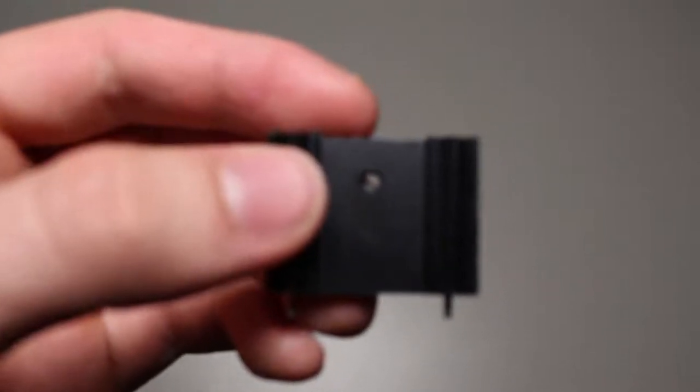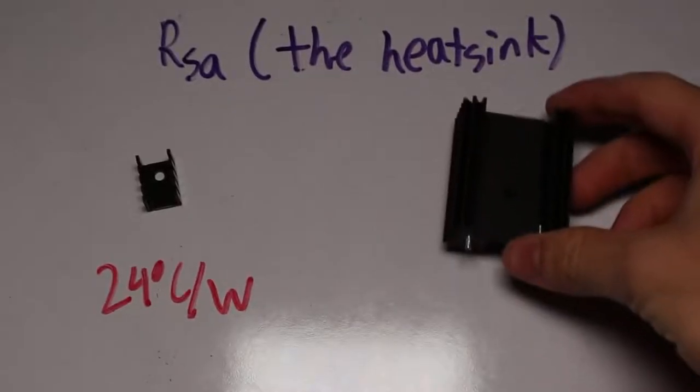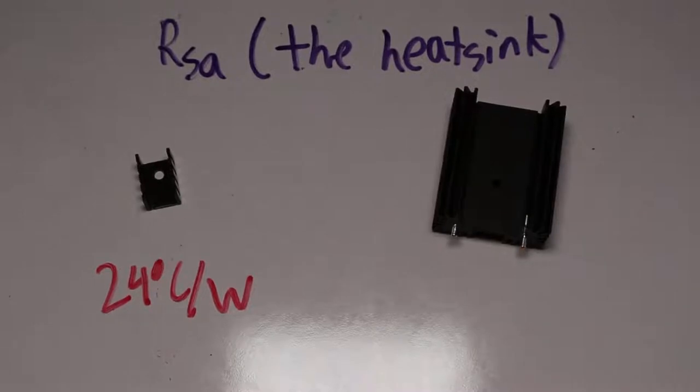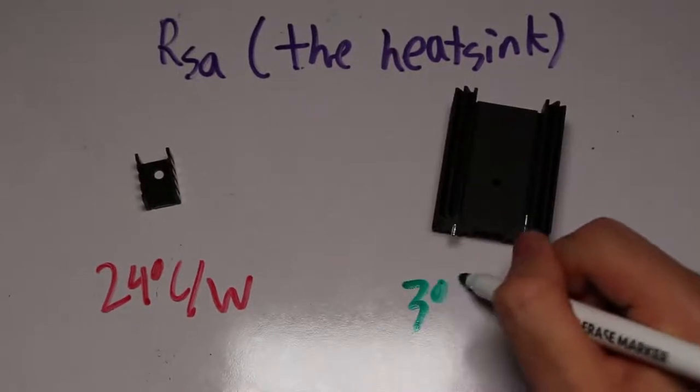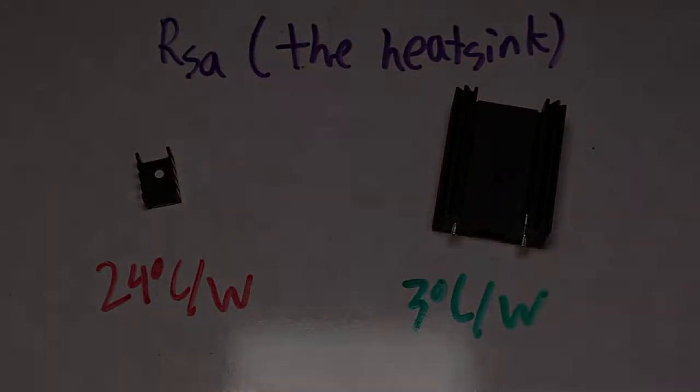Heat sinks basically increase the area in which the dissipated heat can go and it will decrease the overall temperature, saving our circuit. So, in this video I will explain the best way to determine which heat sink your project needs.